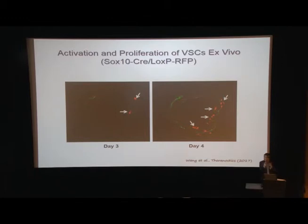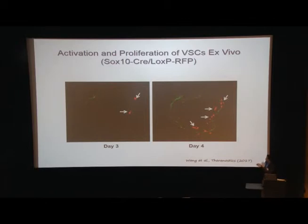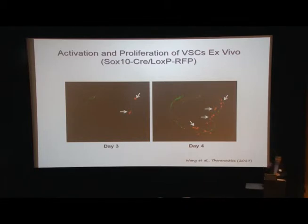In this ex vivo model, you take a lineage tracing mouse where SOX10 positive cells are labeled in red. At day three after injury, you can just see a couple of SOX10 positive cells. But after one more day, you can see cell proliferation and cell migration. There is also an emergence of some previously negative cells that become SOX10 positive. These cells can contribute to vascular remodeling in response to injury.